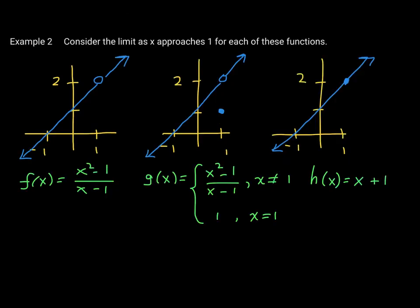For our next example, consider three different functions and what their limit is as x approaches 1. The first function, f, is the same rational function we just looked at — it has a hole and is undefined at x = 1. The second function, g, is a piecewise defined function, and it is defined at x = 1. The third, h, is a linear function. So we have a rational function, a piecewise defined function, and a linear function.